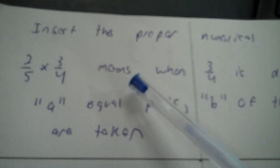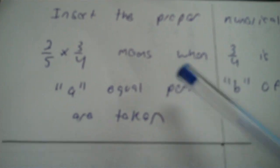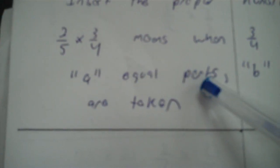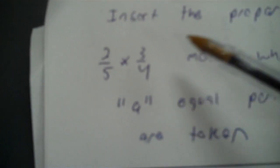Insert the proper numerical values. It says 2 fifths times 3 fourths means that when 3 fourths is divided into A equal parts, B of the A parts are taken. So 3 fourths is divided into 5 parts, so A is 5, and then 2 parts are taken. B is 2.